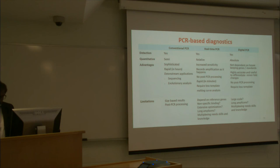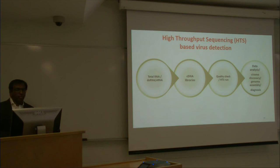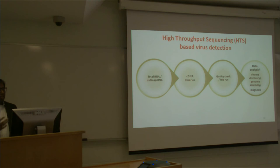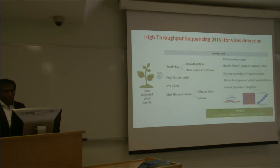That makes us come to the last one — high-throughput sequencing. It's relatively new, but when you look back ten years, the price to do HTS has been coming down very drastically. Basically four steps here: especially when you are looking at the virus, whether you are looking at total RNA, total nucleic acid, double-stranded RNA, or small single-stranded RNA, and then going to the cDNA libraries, running them on an HTS machine, the data analysis, the virus discovery, and whether you want to assemble the genomes — that is a big part of HTS.